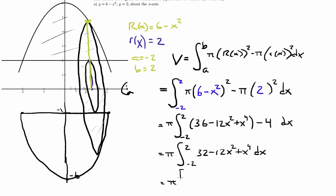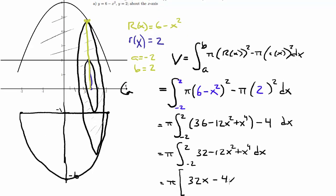You can go ahead and find the antiderivative, so that's pi times, and then 32x minus 4x cubed plus 1 fifth x to the 5th. You evaluate it from negative 2 to 2.